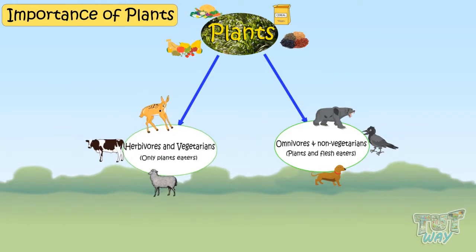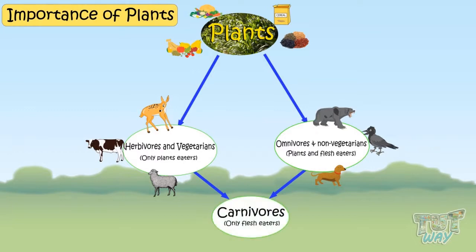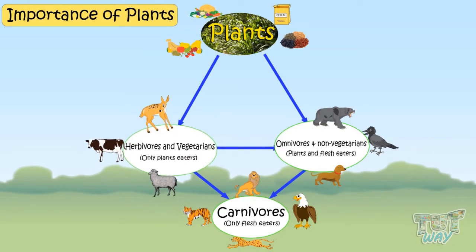These herbivore animals act as food for carnivores. Carnivore animals like lion, tiger, cheetah, and eagle eat other animals as their food. And both plant products and flesh of other animals act as food for omnivore animals and non-vegetarian people.